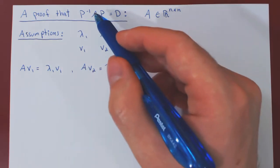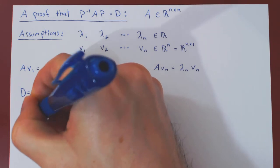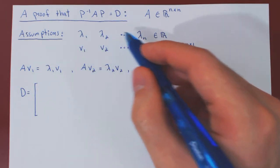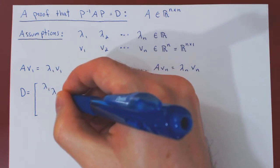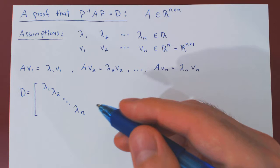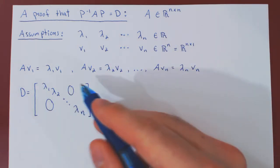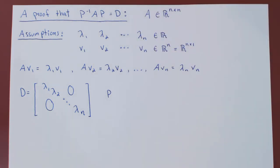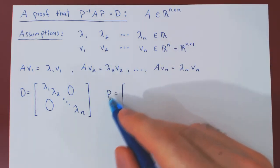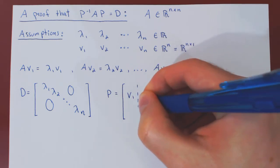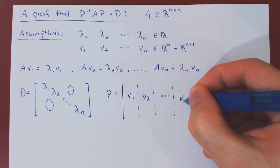Let's look at how we construct P and D. D is the n by n diagonal matrix where the entries along the diagonal are the n eigenvalues of A: lambda 1, lambda 2, all the way down to lambda n, and all other entries are zero. The matrix P is formed by using the eigenvectors as its columns: the first column is v1, the second column is v2, and the nth column is vn.